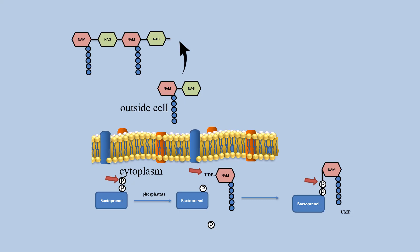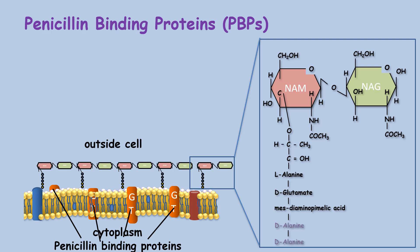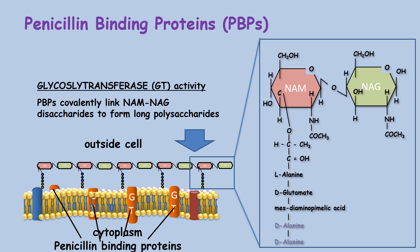All the newly exported NAM and NAG disaccharides need to combine covalently to a growing polypeptide chain being formed outside the cell. The NAM and NAG subunits exported outside the cell are joined to the growing polypeptide chain with the help of transmembrane proteins called penicillin binding proteins. These transmembrane proteins are embedded within the cell membrane and have multiple enzyme functions. They were first discovered for their ability to bind to penicillin, and one of their enzyme functions is called glycosyl transferase, which forms a long polysaccharide chain by linking the NAG and NAM disaccharides together.